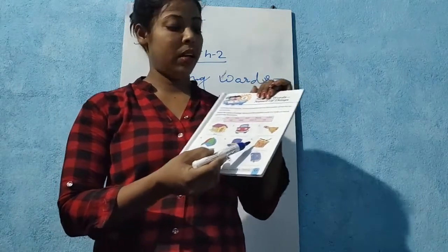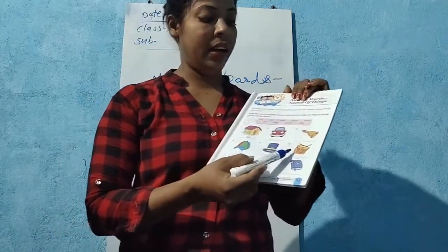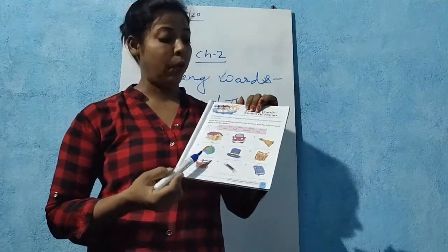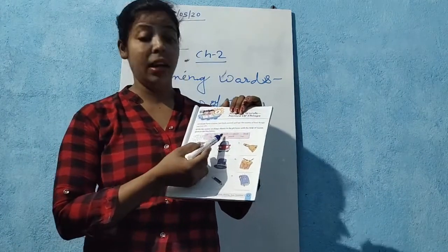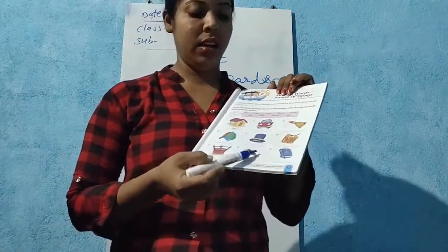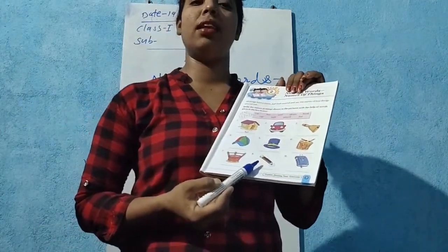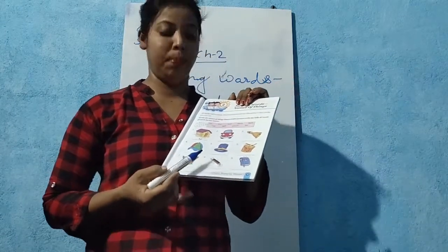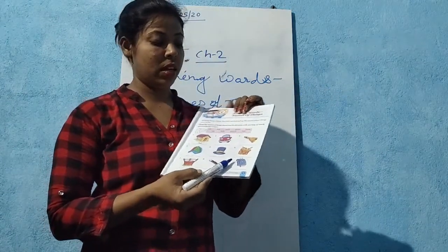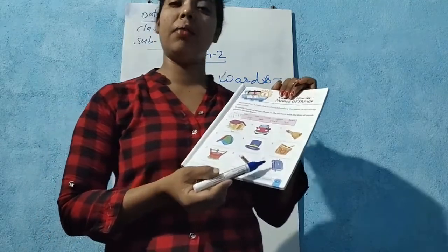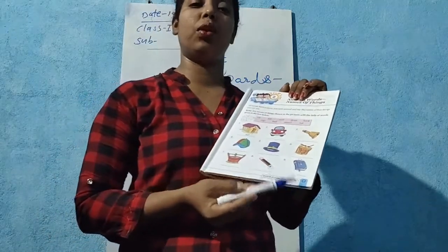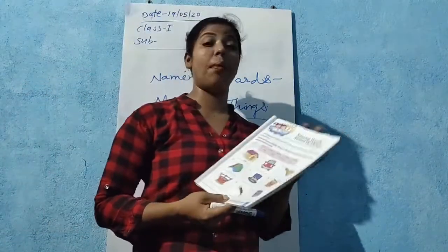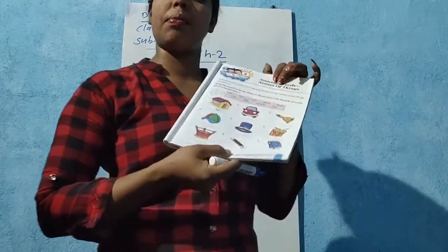This is a drum — D-R-U-M. This is a well — W-E-L-L. This is a pencil — P-E-N-C-I-L. This is a book — B-O-O-K. Everything you need to see in your book. Please see it and identify all the names.